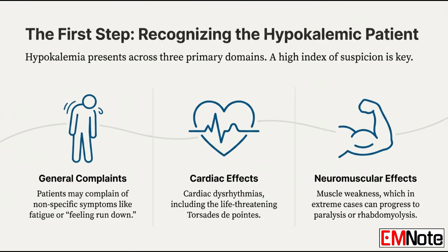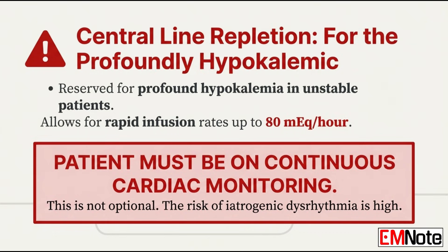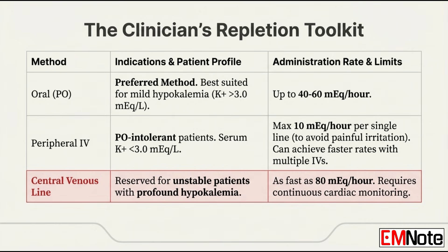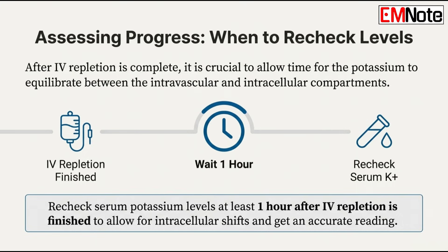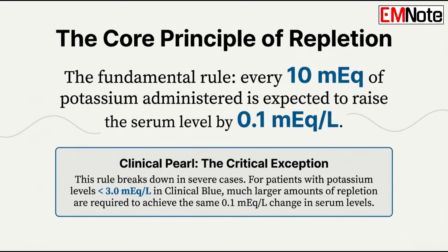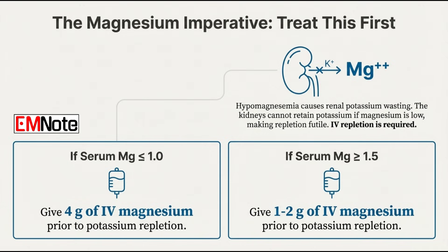To recap: the absolute fastest infusion rate is 80 milliequivalents per hour — only for an unstable patient through a central line with continuous cardiac monitoring. We covered the kinetics, the replacement rules, and that critical one-hour wait before rechecking a level. The final takeaway: know the 10-for-0.1 rule, but if your repletion isn't working, assume it's magnesium. It's the clinical gatekeeper. Correct the magnesium first, or you're just spinning your wheels. Always look for that hidden deficit.